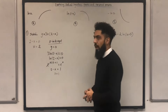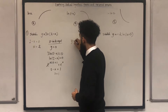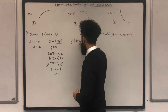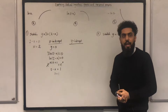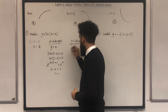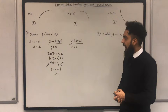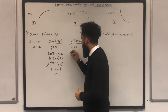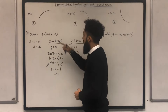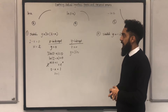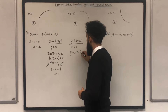Now to work out the y-intercept, all I need to do is set x = 0. If x = 0, I get y = 3ln(2 - 0) = 3ln(2).